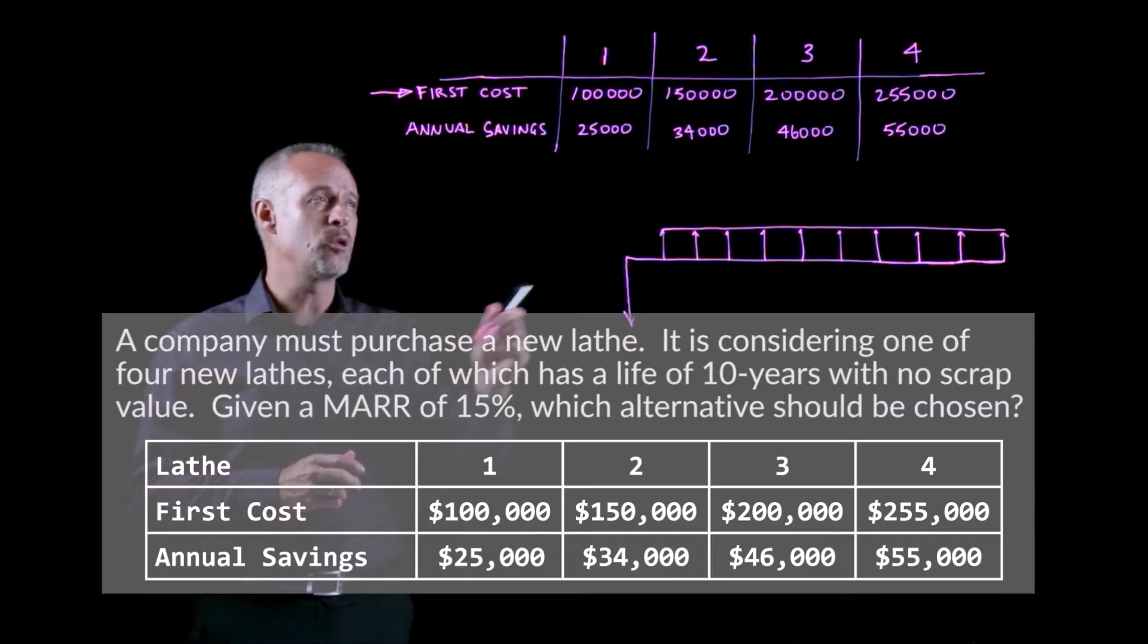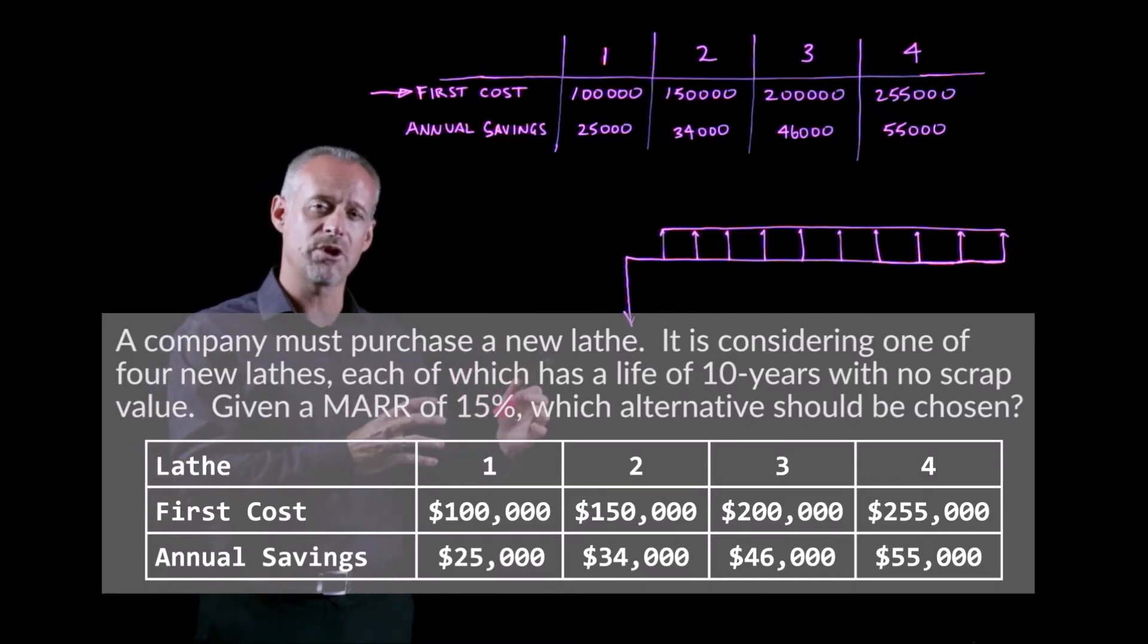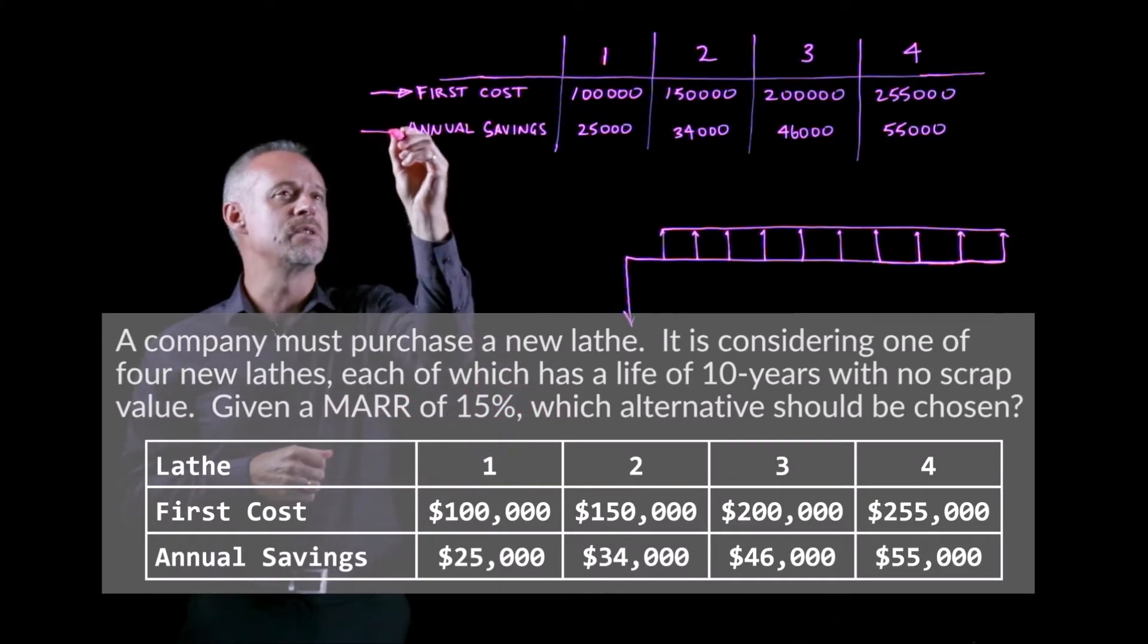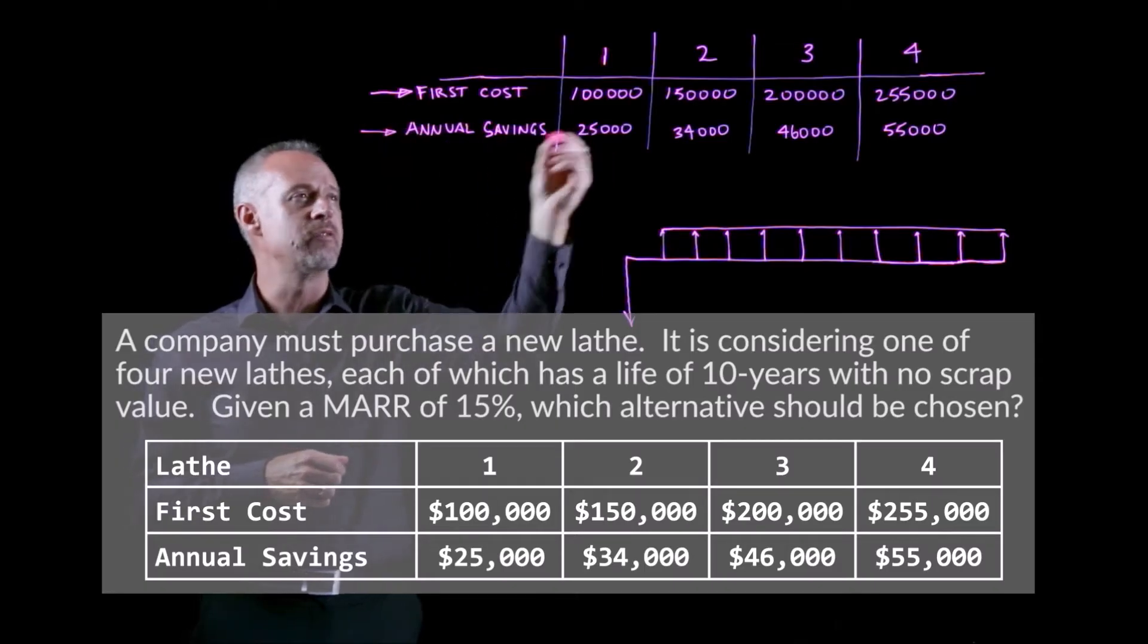Then each of the projects, in this case, it's a piece of equipment. We project that that investment in the project, that first cost, will then produce an annual savings. So every year, each of these investments will produce an annual savings of a certain amount.